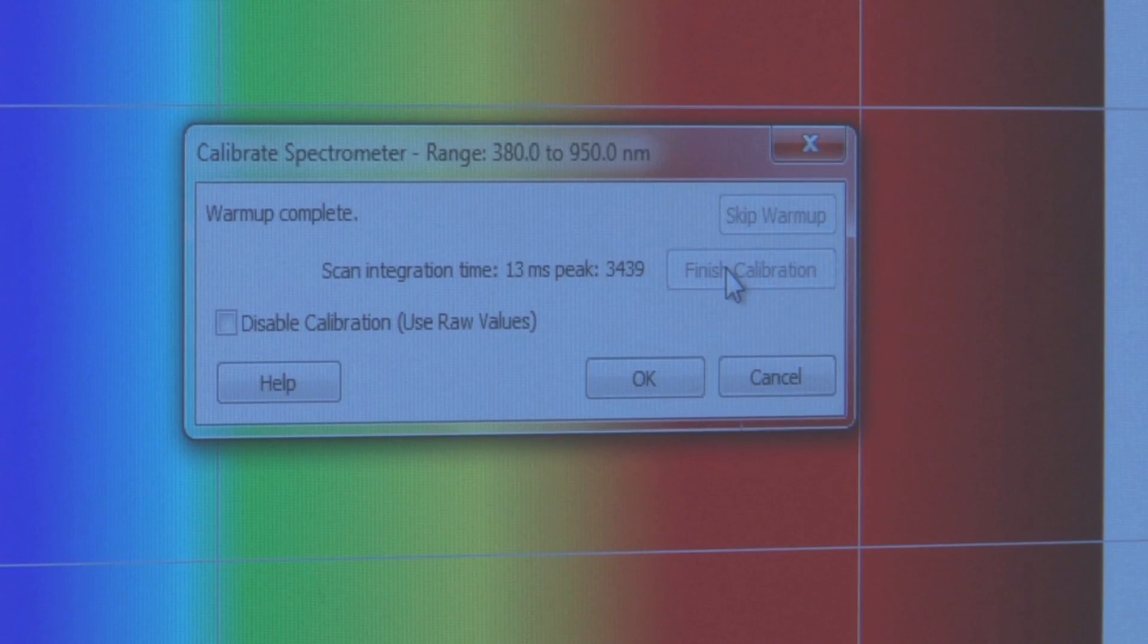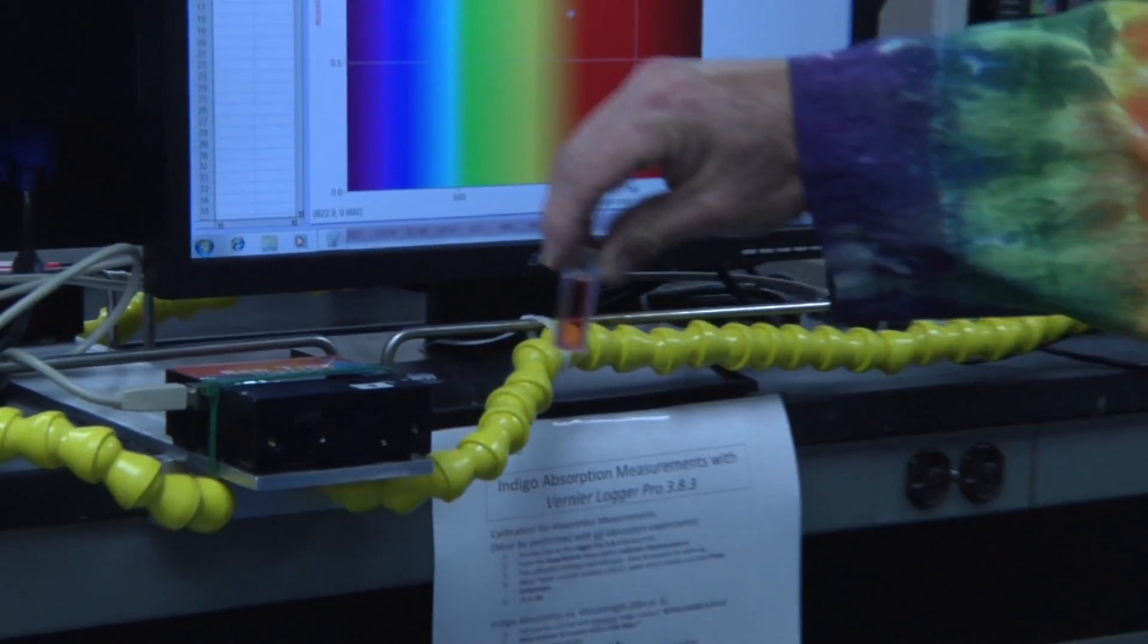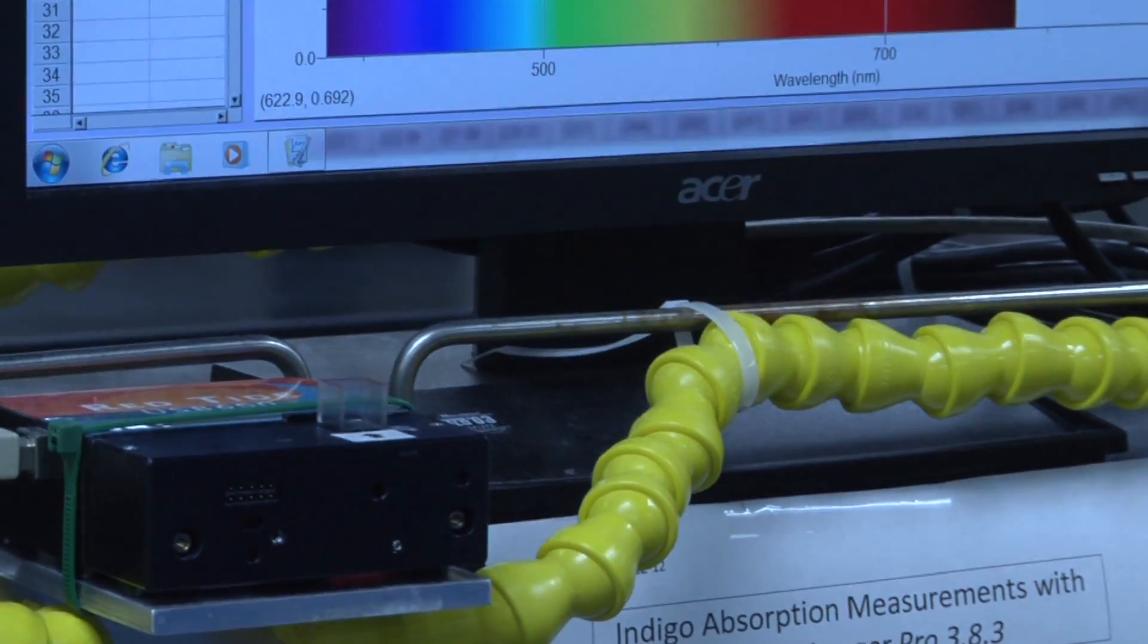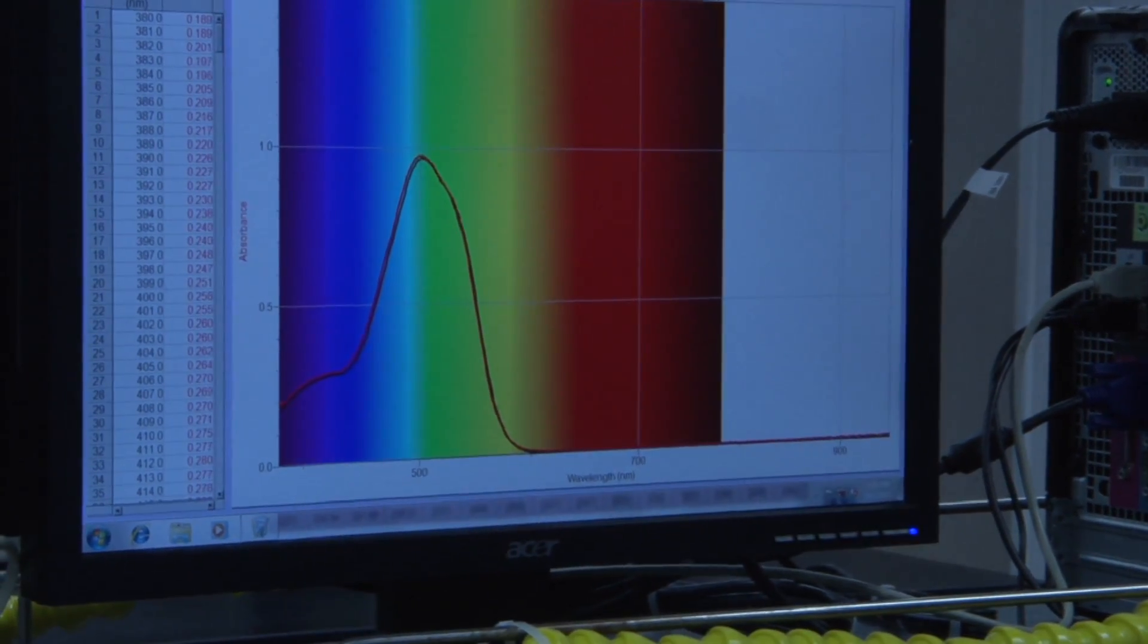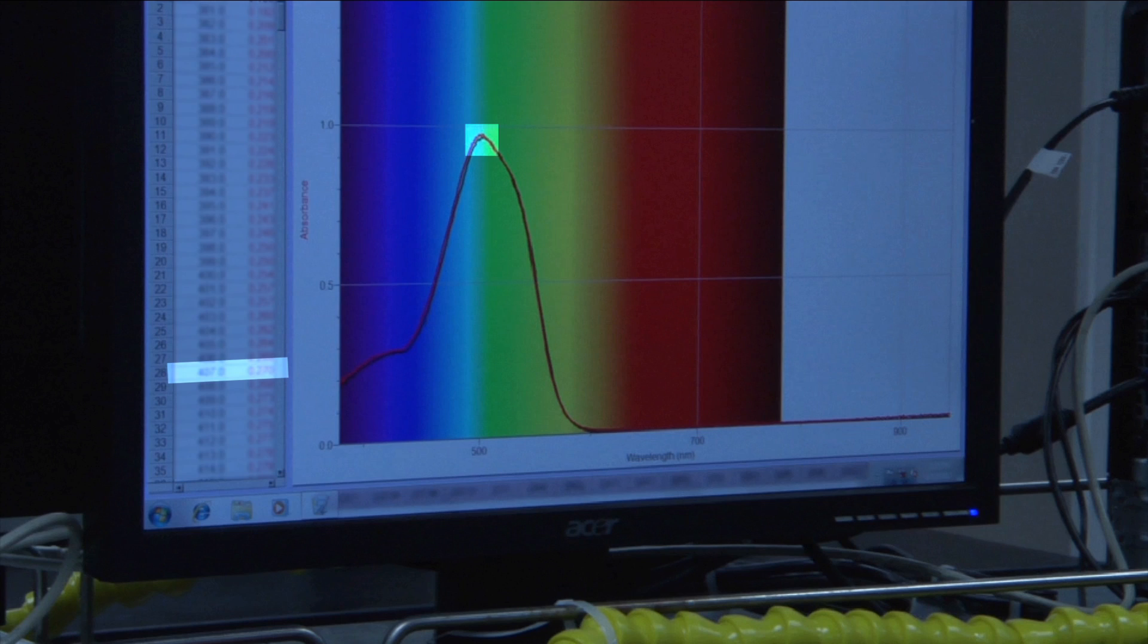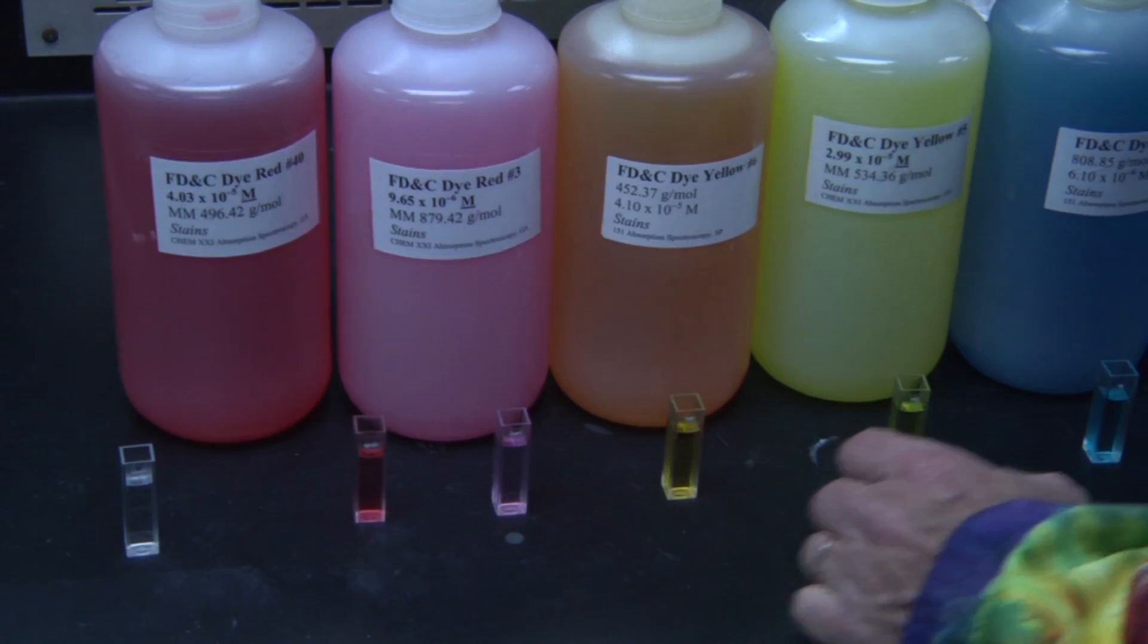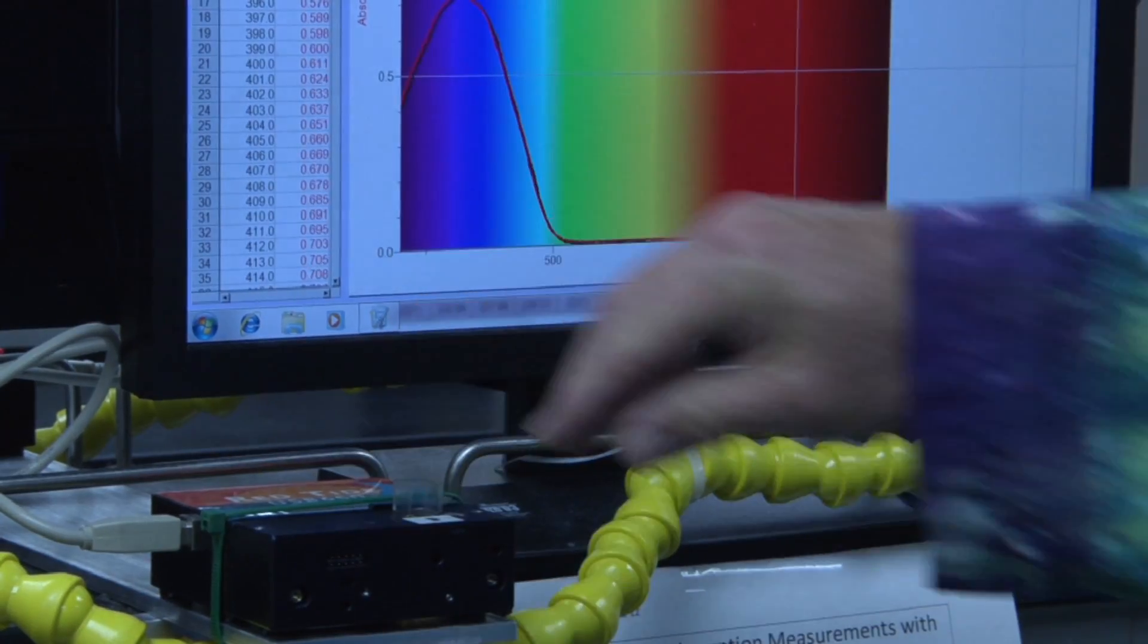Once the spectrometer is calibrated, you can replace the reference cuvette with a cuvette containing the solution you wish to evaluate. The first thing you will need to do is identify the wavelength with the largest absorbance value. This will be different for different dye solutions.